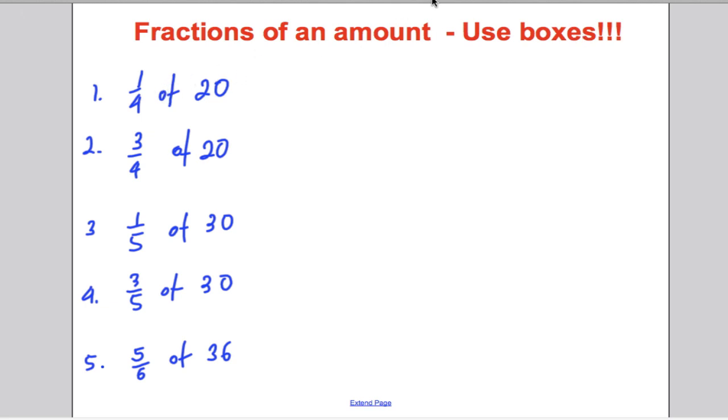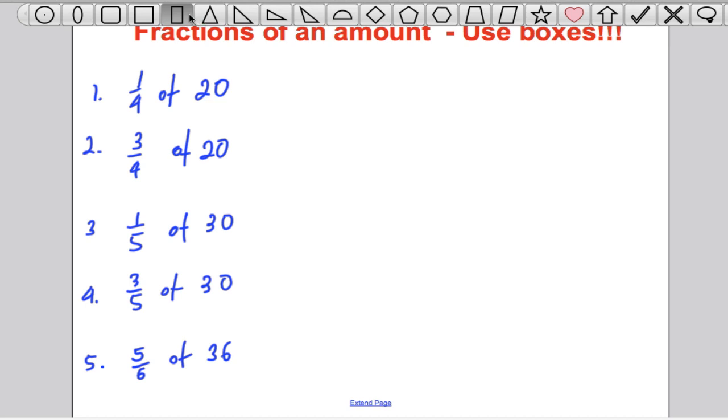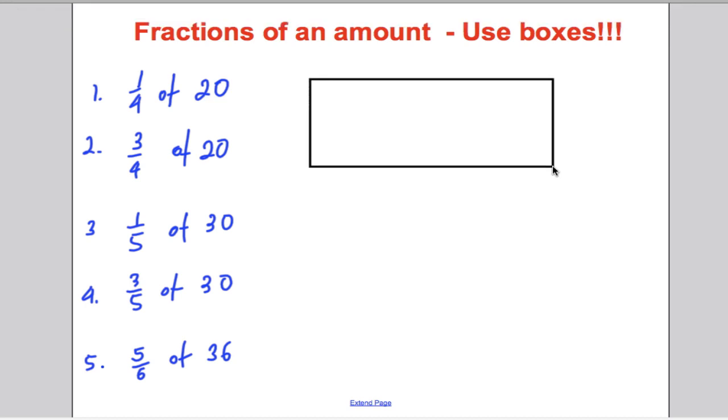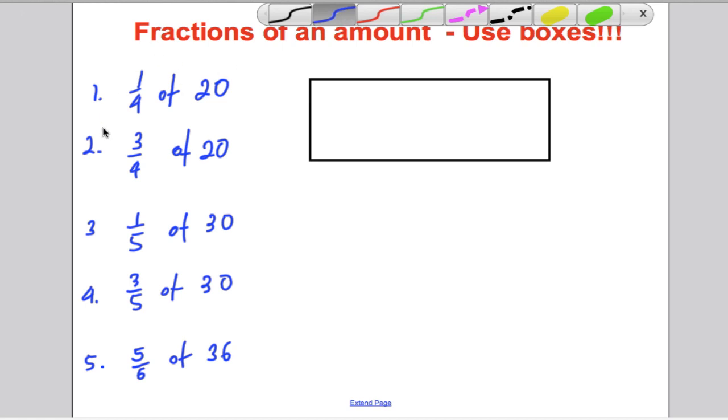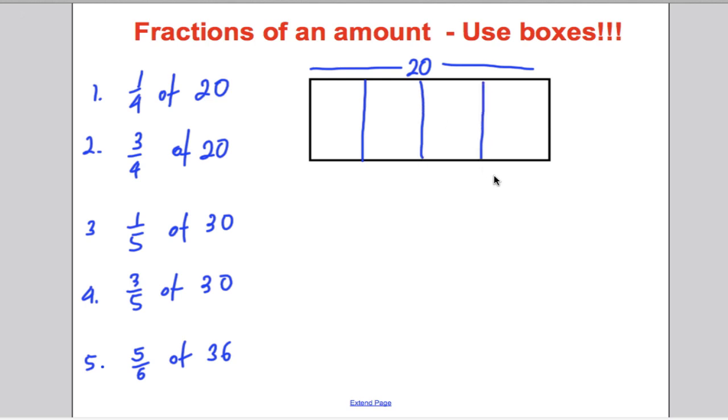Firstly, question one, a quarter of 20. Use boxes. Let's draw a box to represent 20. And what we're going to do is we want to have it in quarters. So this whole box here represents 20. And we're going to divide it into four equal parts. Now the question is, what goes in each box? Well, what number goes in each box so that if you add it up, the same number four times you get 20? Well, the number must be five.